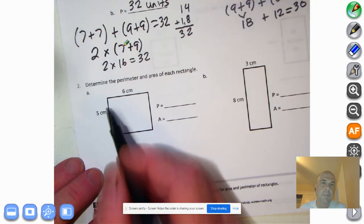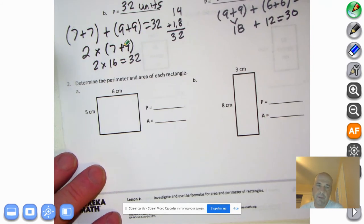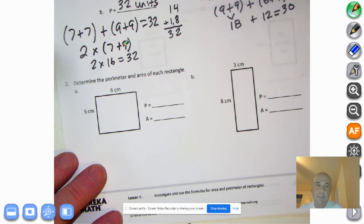Let's get down to two. It says determine the perimeter and area of each rectangle. Why don't you try this on your own? Pause the tape and give it your best shot. In five, four, three, two, one.